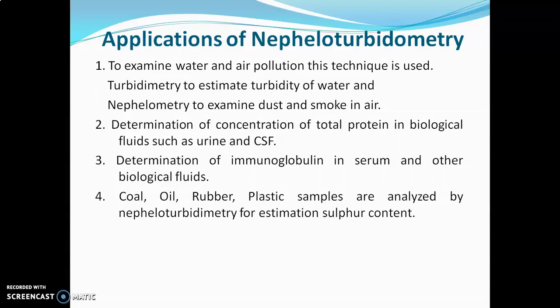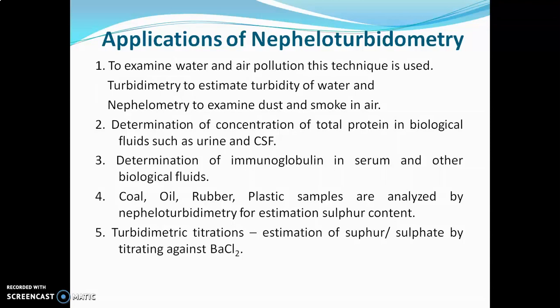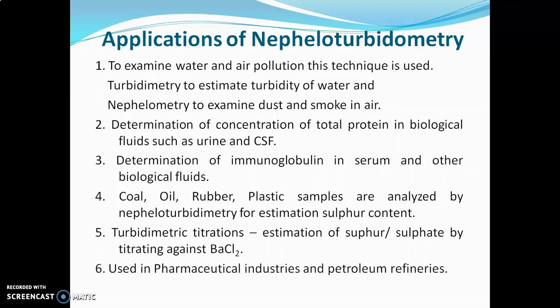Coal, oil, rubber, and plastic samples are analyzed by nephelo-turbidometry for estimation of sulfur content. Sulfur is first converted into sulfate, then treated with barium chloride, producing turbidity that is measured by nephelo-turbidometry. Turbidometric titrations are also performed, such as estimation of sulfur or sulfate by titrating against barium chloride. Nephelo-turbidometry is used in pharmaceutical industries and petroleum refineries.